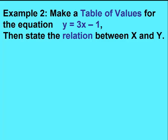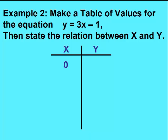Let's do another example. This time we'll make the table of values, then state the relation between x and y. We'll draw our two columns for x and y. 0 is a good number to start with for x.